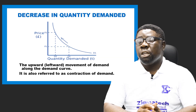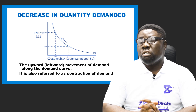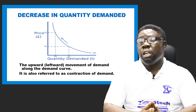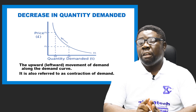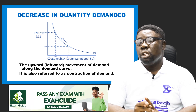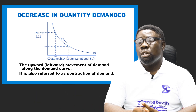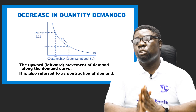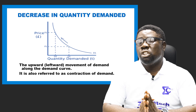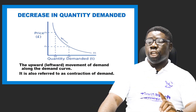A decreasing change in quantity demanded represents an upward-leftward movement along the demand curve, also referred to as a contraction of demand. In the diagram, the price rose from P1 to P2 and the quantity demanded dropped from Q1 to Q2. Q2 is the new quantity demanded while Q1 is the previous quantity demanded. That is the two types of change in quantity demanded.